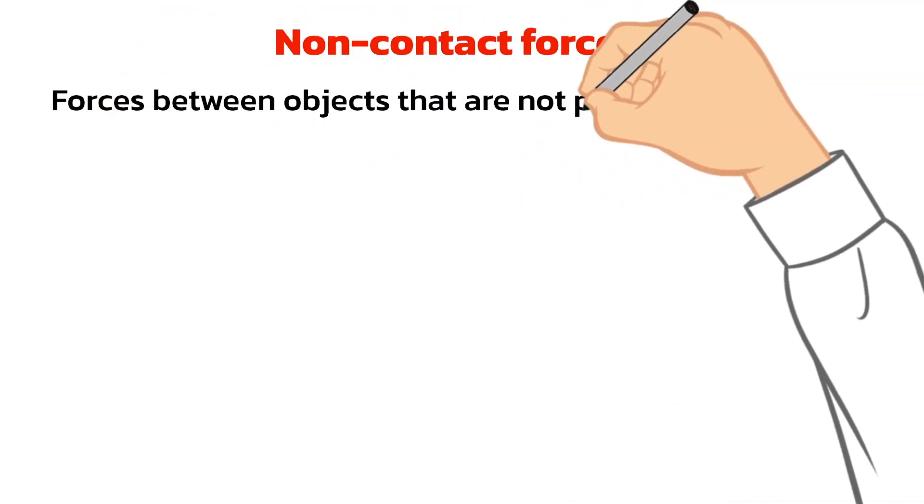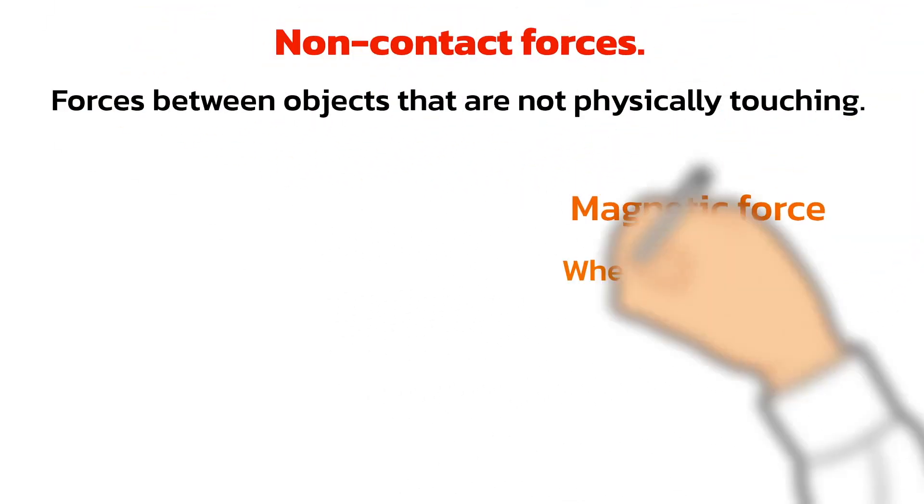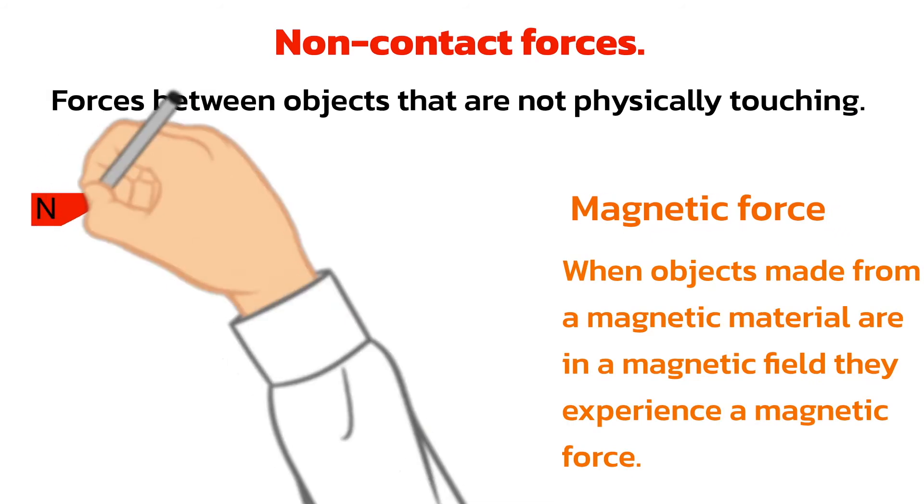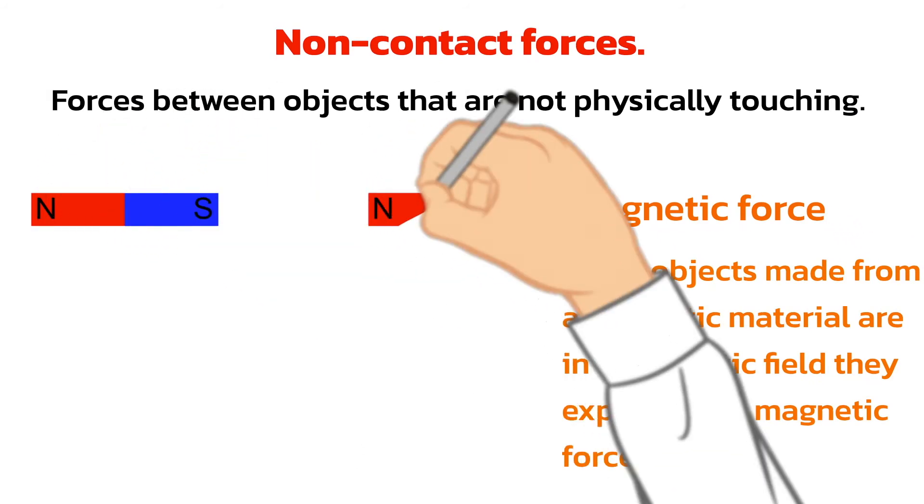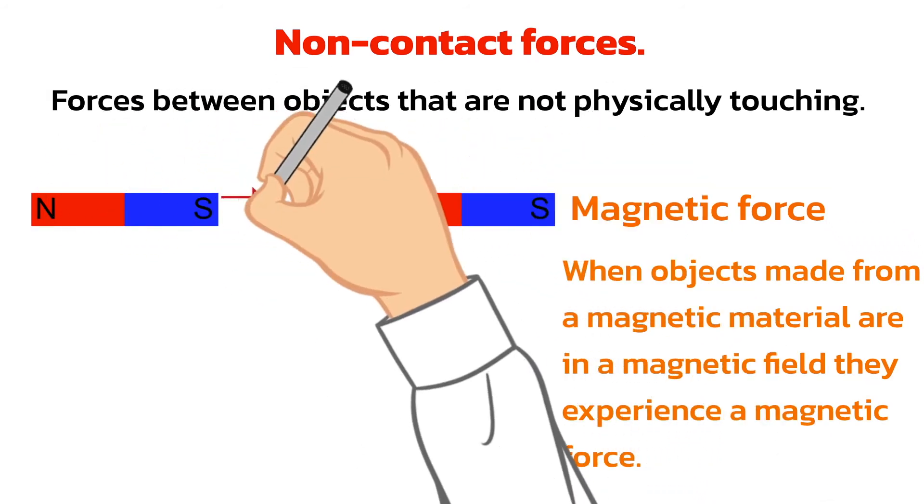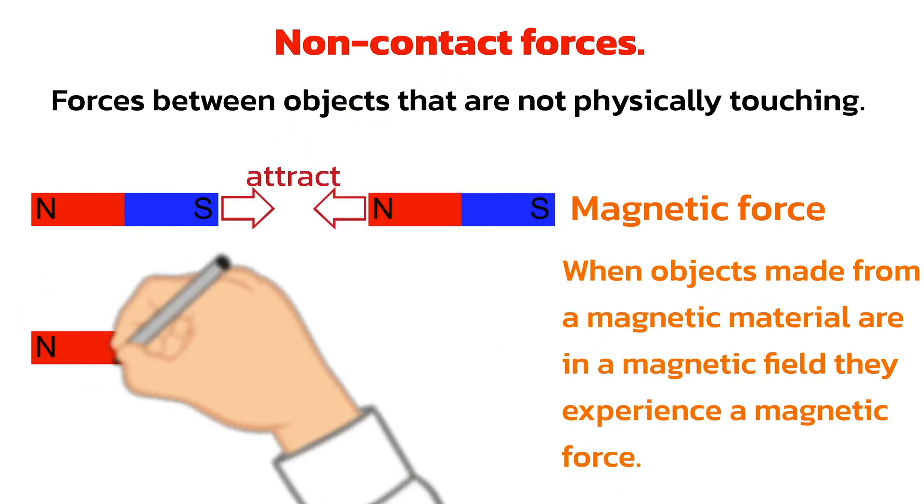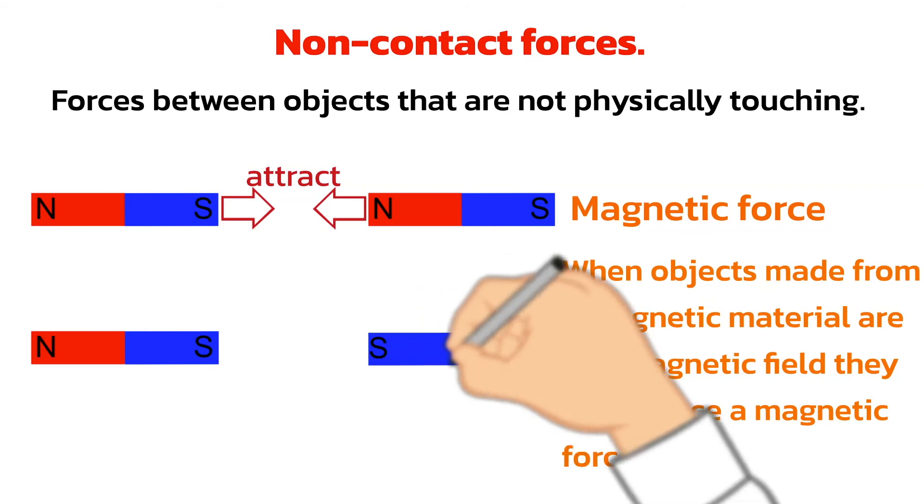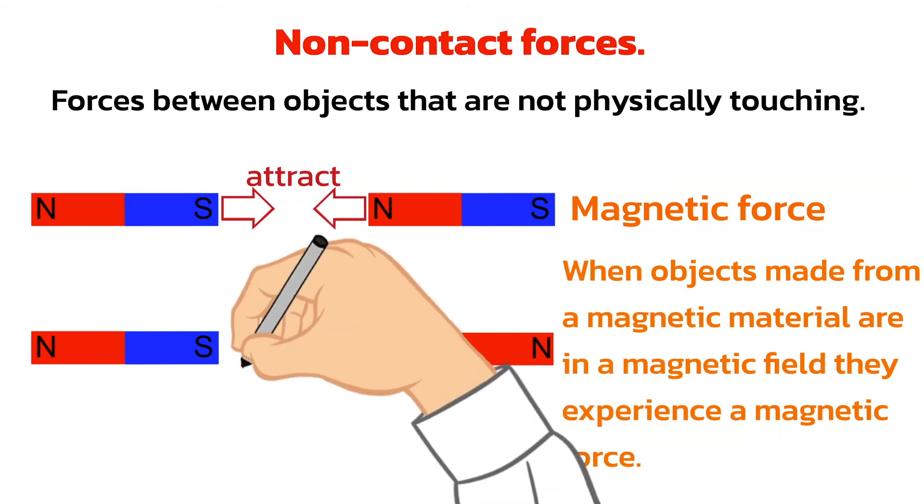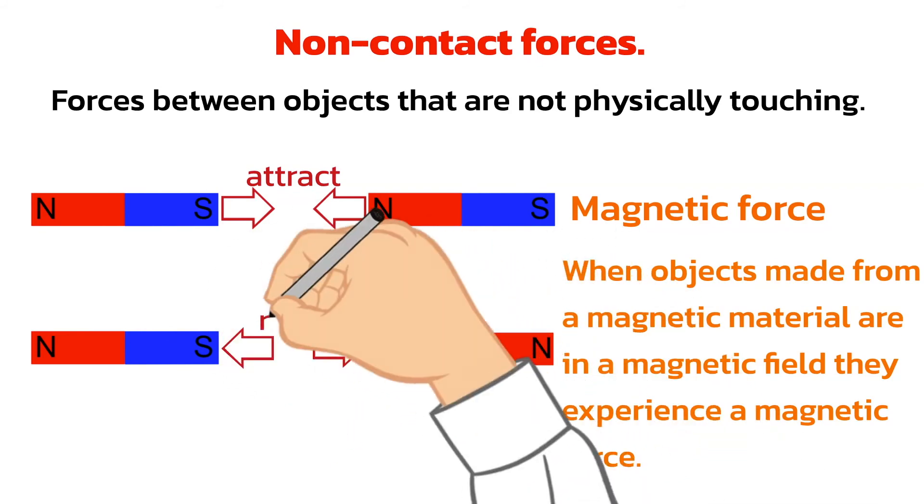Another very familiar non-contact force is magnetism. When magnetic materials, iron, cobalt, nickel and iron, are in a magnetic field they experience a magnetic force. If the South Pole of a magnet is brought near to a North Pole, they will attract each other. If two South Poles, or two North Poles, are brought near to each other, they will repel.